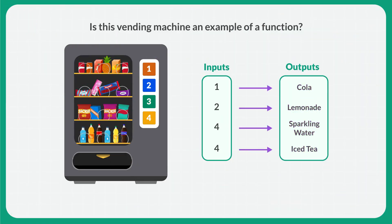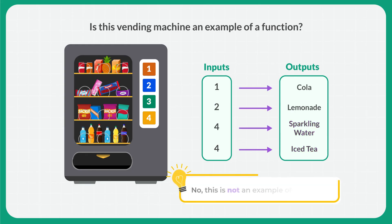Determine on your own: is this vending machine an example of a function? You can see that button 4 is pressed two times. The first time, the output is a bottle of sparkling water. The second time, the output is iced tea. This input, button 4, gives two different outputs. So this vending machine is not an example of a function.